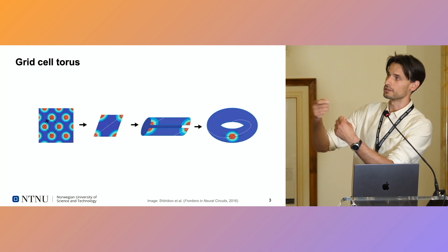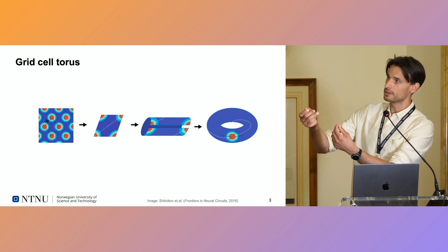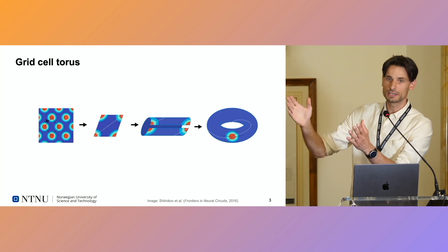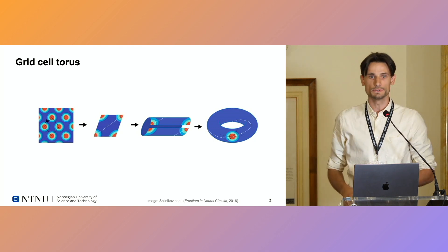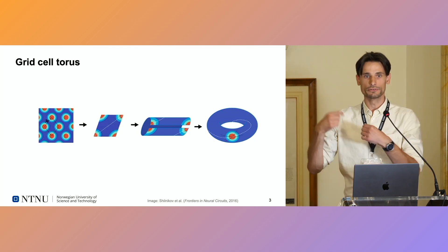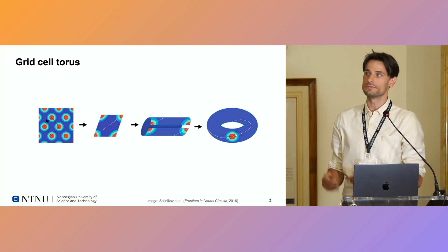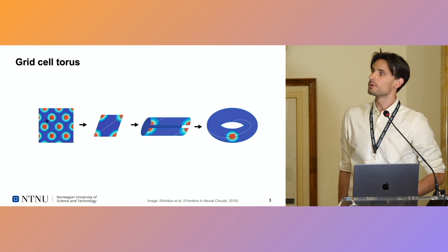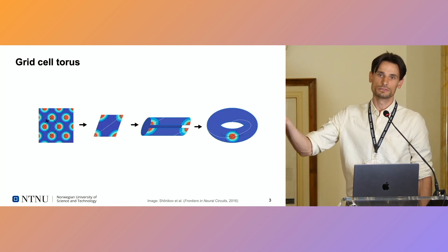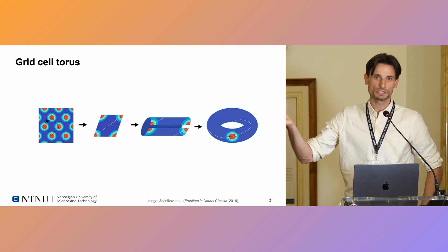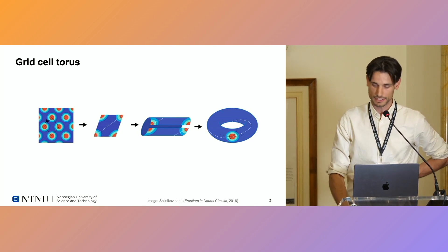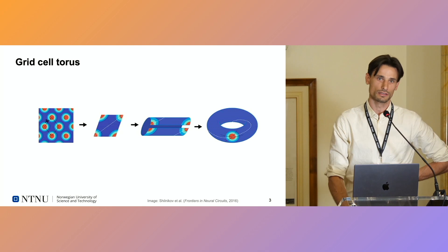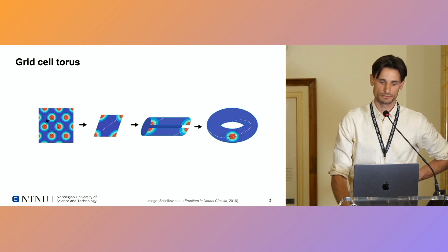A grid cell module will then cover the whole rhombus. Furthermore, if we glue this tile according to the periodicities of this pattern, we see that we get a toroidal surface, and we thus expect that the activity lives on this torus.